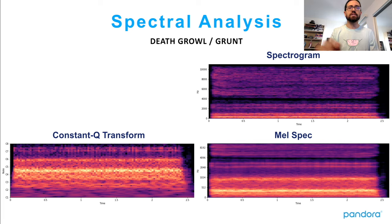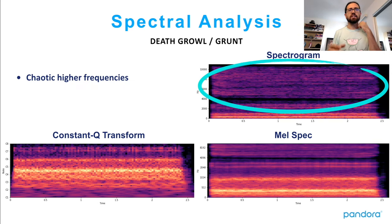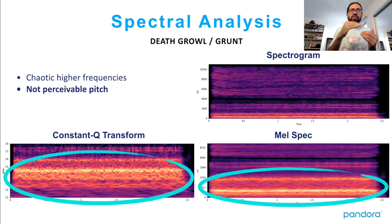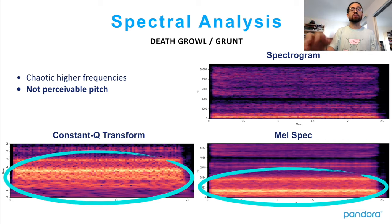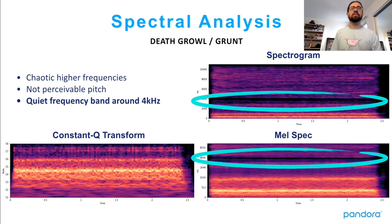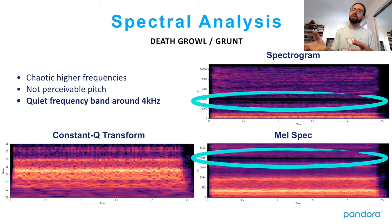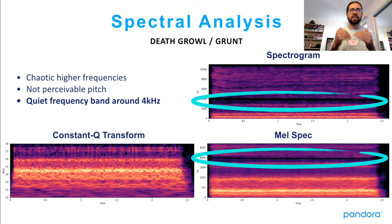The death growl or grunt: again there are chaotic higher frequencies making the spectrum pretty noisy. But in the lower frequencies, instead of narrow harmonic lines, there are two very wide noise bands — that's why we can't really perceive a pitch. You can see these clearly in the Mel spectrogram and constant-Q transform. There's also a quiet frequency band around 4000 Hz — unclear if that's a microphone artifact or a genuine feature of the effect. The fundamental frequency appears below 500 Hz, between 300 and 400 Hz — very low, with a lot of low energy.